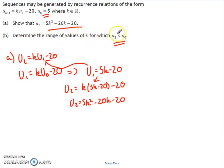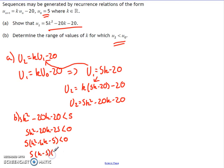Second part, determine the range of values of k for which u2 is less than u0. We have to set up an equation and solve it. u2 less than u0 means 5k squared take away 20k take away 20 has to be less than 5. It's the case of getting everything on the left and solving it like a quadratic. So 5k squared take away 20k take away 25 is less than 0. Factorize out the 5, a common factor. So you've got 5 bracket k squared take away 4k take away 5 is less than 0.